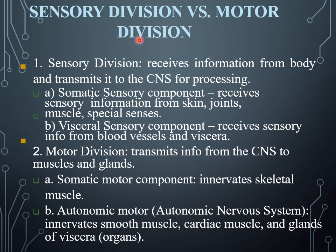The sensory division and motor division are the two main divisions of the nervous system. The sensory division receives information or signals from different body organs and transmits them toward the central nervous system — that is the brain and spinal cord — for processing. For example, it contains the somatic sensory component.